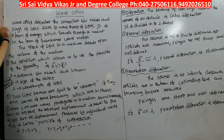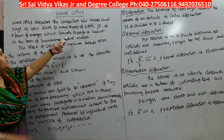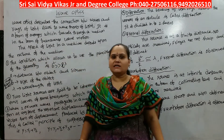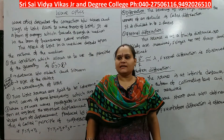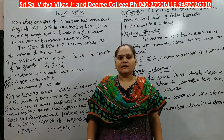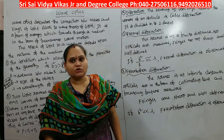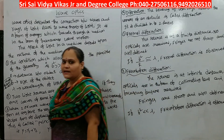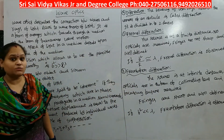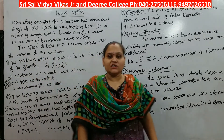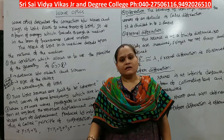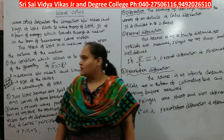According to the wave theory of light, light is a form of energy which travels through a medium in the form of transverse wave motion. Light has a transverse wave motion, meaning it has crests and troughs. Transverse wave motion means the particle propagation is perpendicular to the propagation of the light wave.